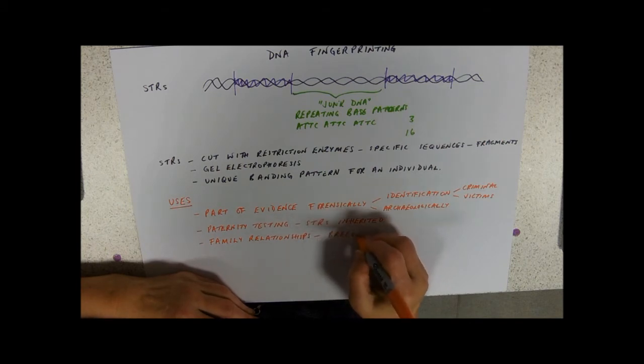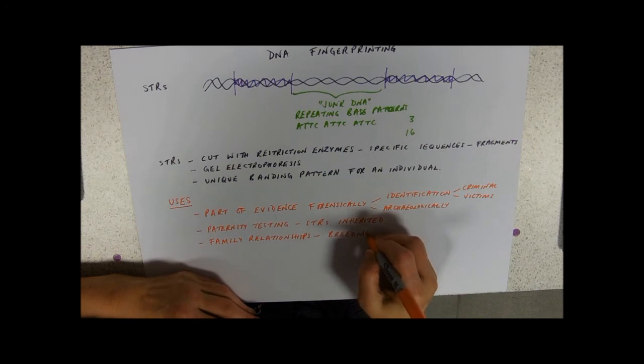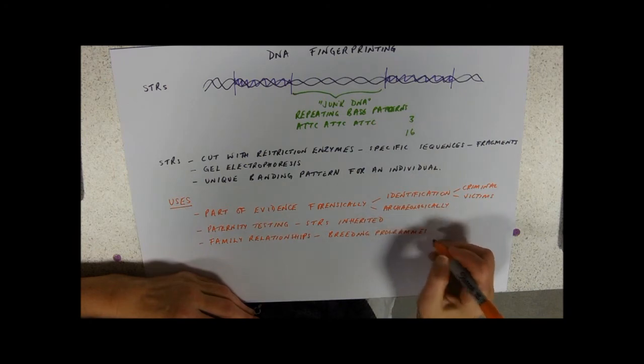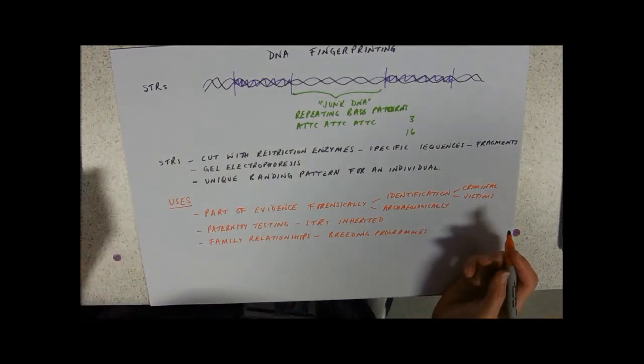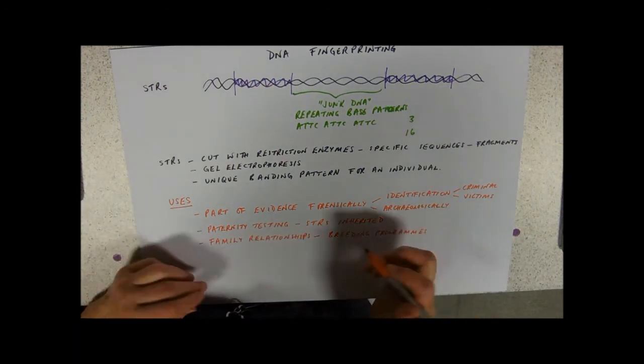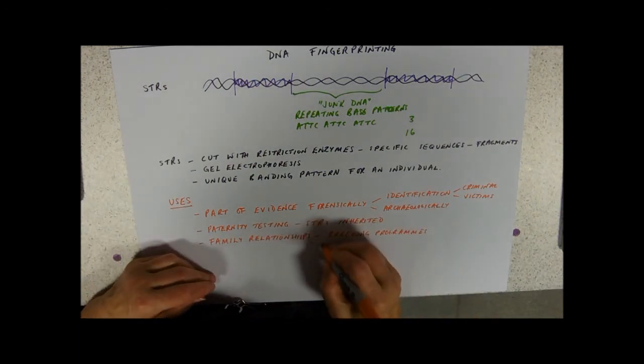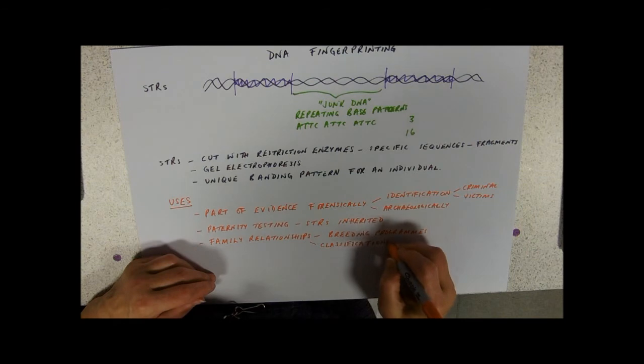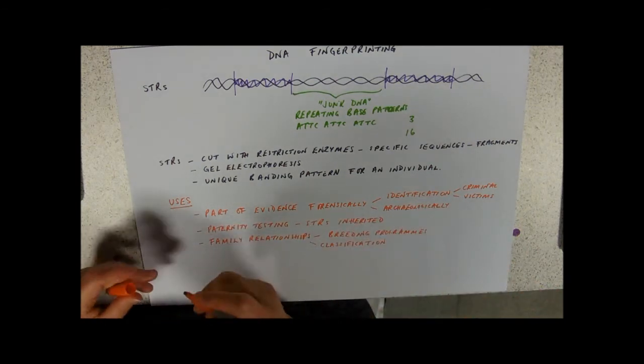And we can use it to establish family relationships. And obviously here I'm talking about animals, so if we're using it for breeding programs, you want to know that if you're going to mate your panda you're not mating it with a sibling. And of course for classification purposes, we've watched quite a few little videos on classification using DNA evidence, and they start with a DNA fingerprint.